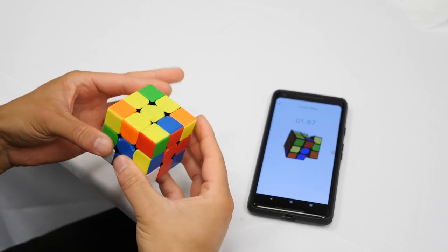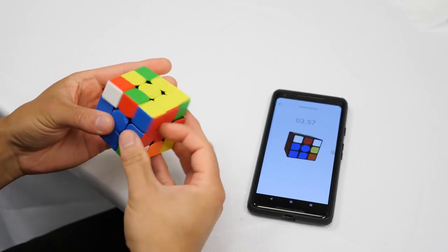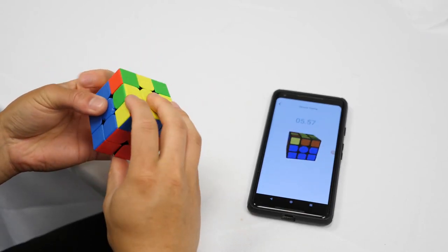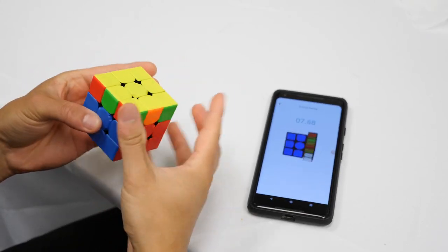Hey everyone, this is Phil. This is an average of 5 I did on the GAN 356i. This was done in training mode and I got a 9.26, so not so bad.